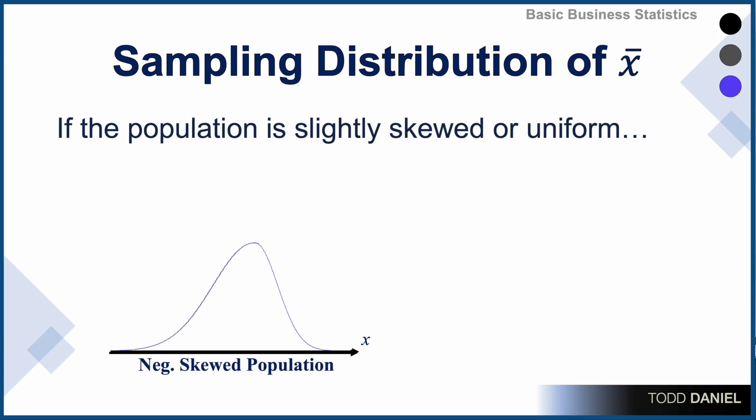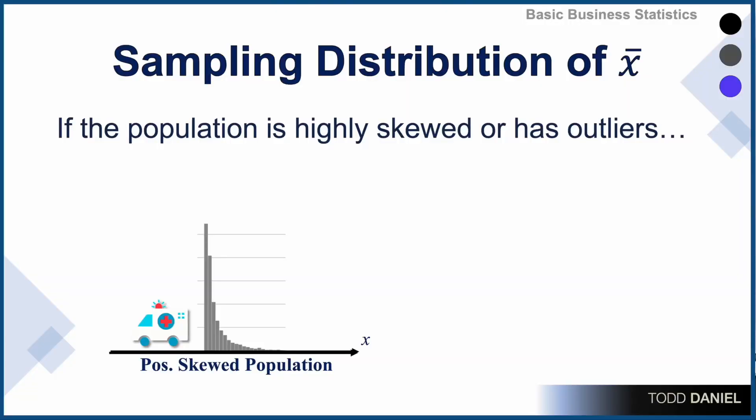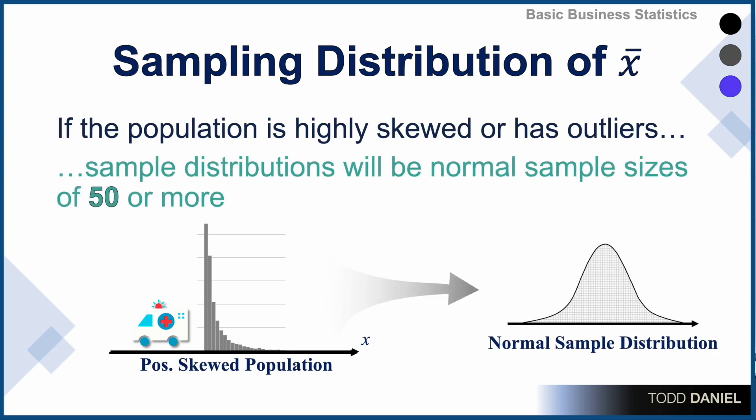If our underlying population is slightly skewed or uniform, then the distribution of sample means will approach normality more quickly if we use a slightly larger sample size — say somewhere around 30. If our underlying population is highly positively skewed or has outliers, then our distribution of sample means will approach normality for samples of size 50 or more.